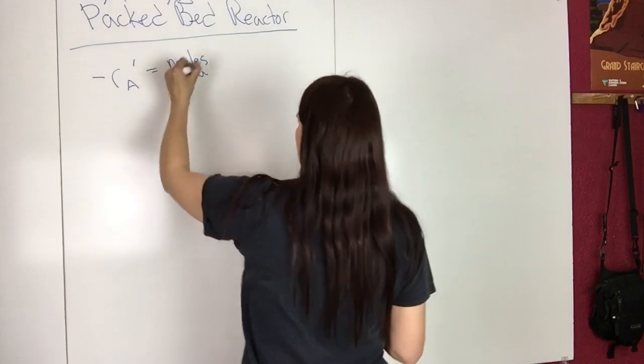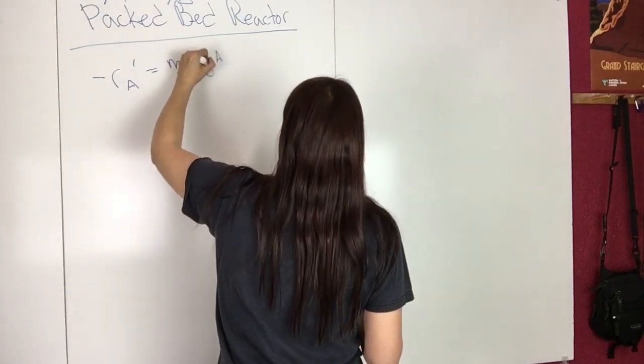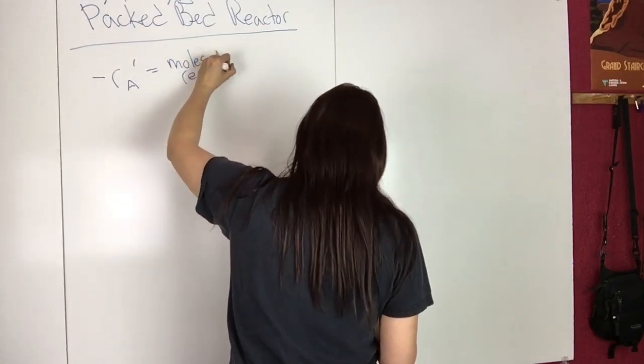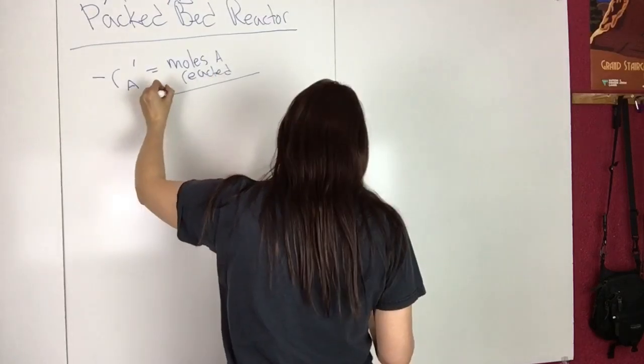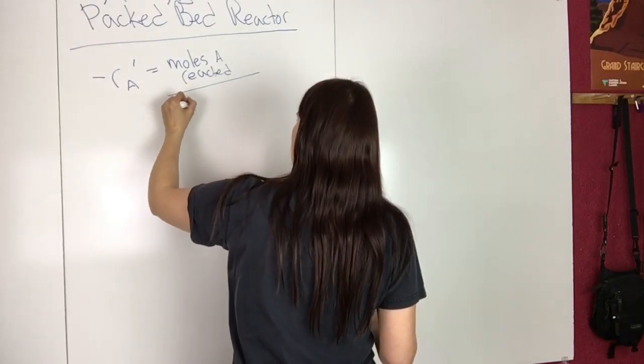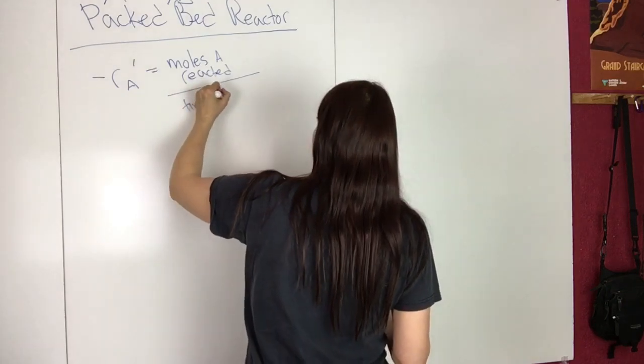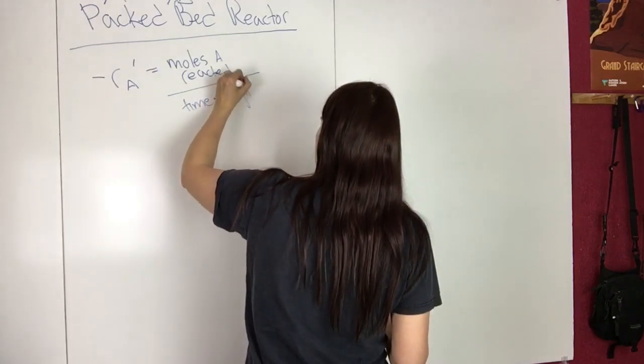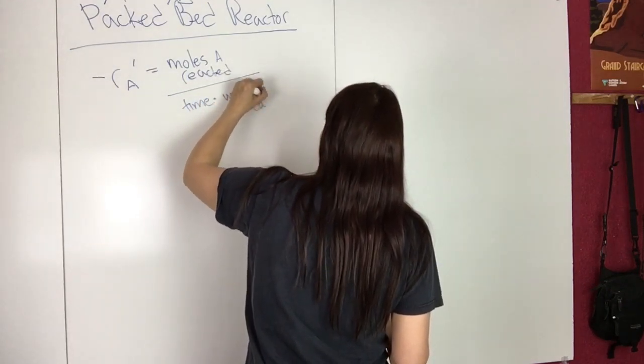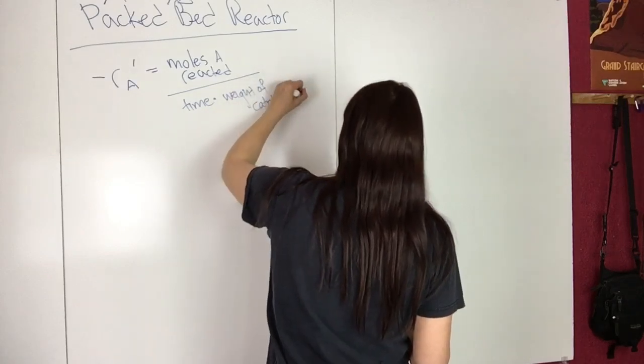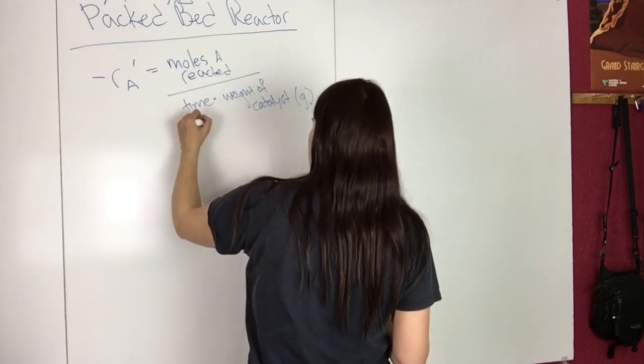Moles of A reacted, divided by time, multiplied by the weight of the catalyst, and this is often in grams, and this is often in seconds.